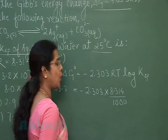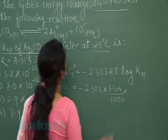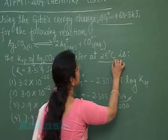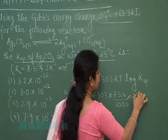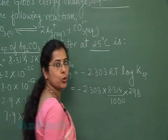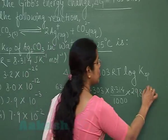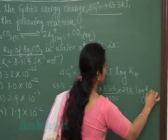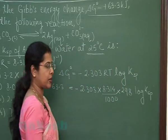So divide R by 1000. T is the temperature; in this question the temperature is 25°C, which equals 298 K. Put in the values and calculate the solubility product.